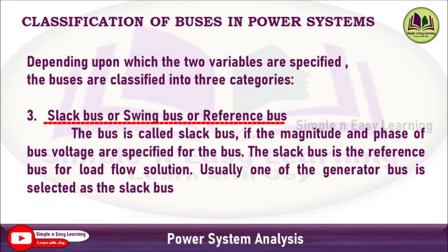The third one is a slack bus, also called a reference bus or swing bus. The bus is called a slack bus if the magnitude and phase of bus voltage are specified — that is, V and delta are specified. The slack bus is a reference bus for load flow solution, and P and Q are to be obtained.